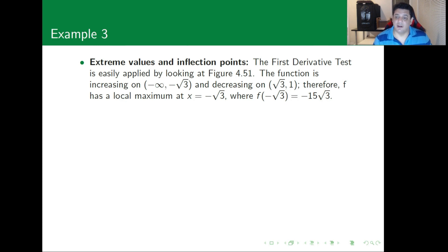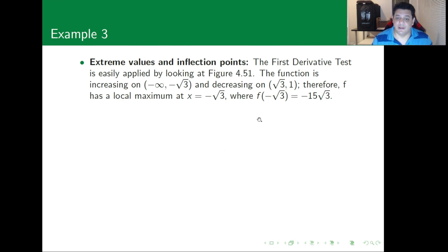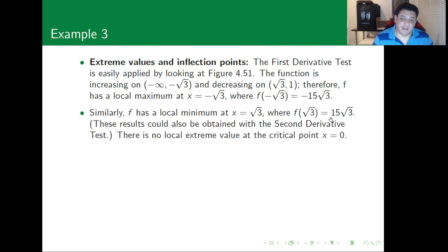We evaluate the function at the extrema and inflection points to obtain y-axis values for graphing. Plugging in √3 gives approximately 15√3/2, and plugging in -√3 gives -15√3/2. So f has a local maximum at x = -√3 and a local minimum at x = √3.